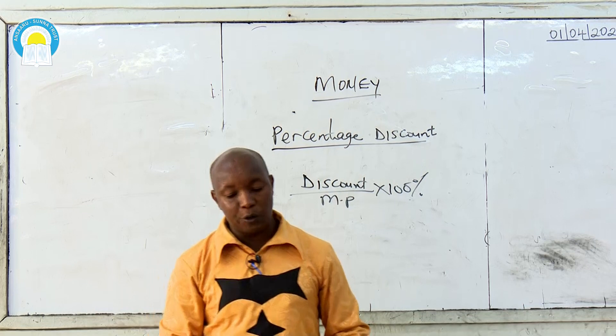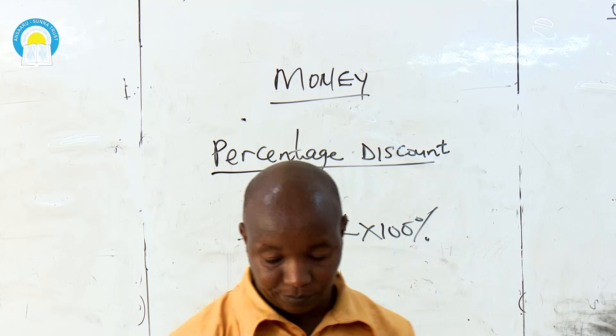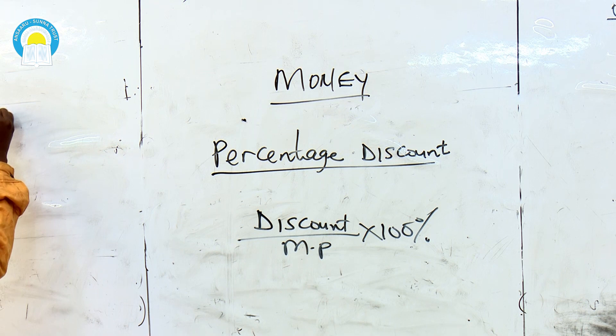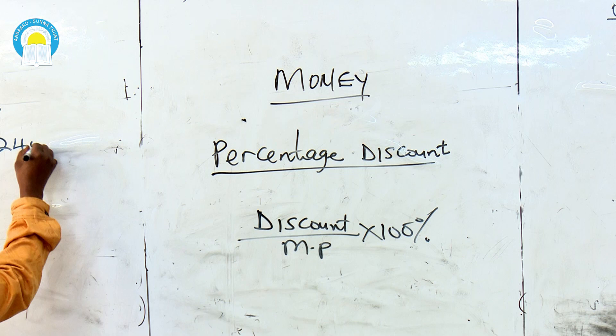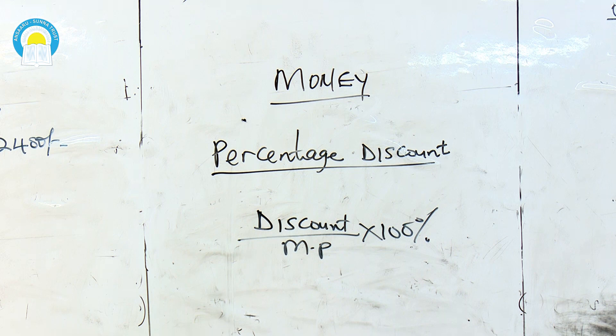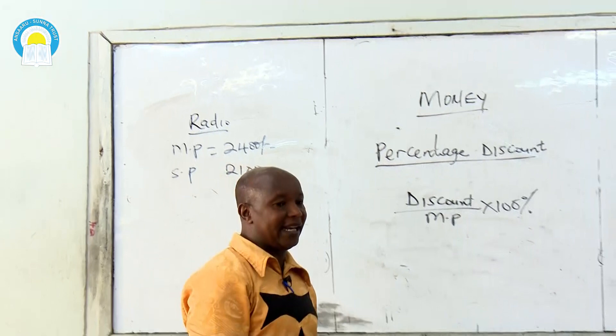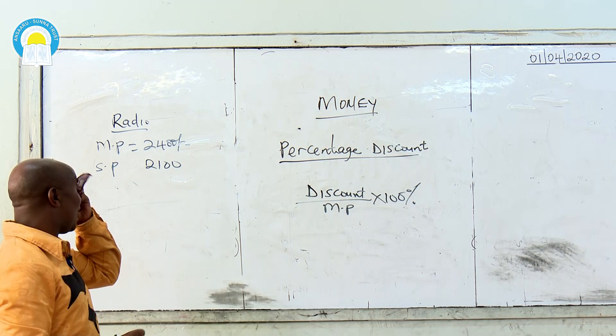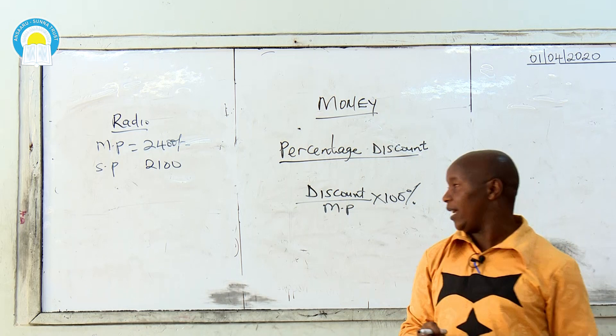Now, let's calculate percentage discount. The marked price of a radio was 2,400 shillings. Hammond bought the radio for 2,100 shillings. What was the percentage discount? First, you get the discount. As I said yesterday, discount is the marked price minus the selling price. In our case, the marked price is 2,400 and the selling price is 2,100, so the discount is only 300 shillings.